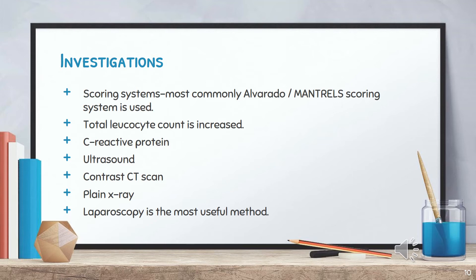Investigations: The Alvarado MANTRELS scoring system is most commonly used. In CBC, TLC will be raised; C-reactive protein will be raised. Ultrasonogram is done and has value to rule out differential diagnoses. Contrast CT scan, if available, is a good option especially when diagnosis is not clear. Plain X-ray abdomen rules out other differentials. Laparoscopy is the most useful method and can be used for both diagnostic and therapeutic purposes.